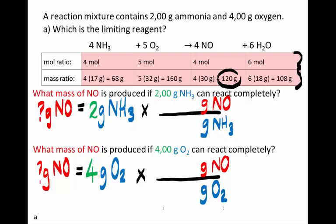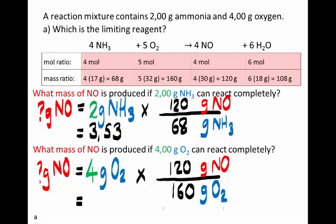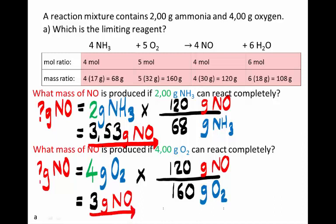We find that 3.53 grams of NO would be produced if all of the ammonia could react, whereas 3 grams of NO would be produced if all of the oxygen could react. 3 is smaller than 3.53, so it is the oxygen that is the limiting reagent, because it produces less of the product when all of it is used up.